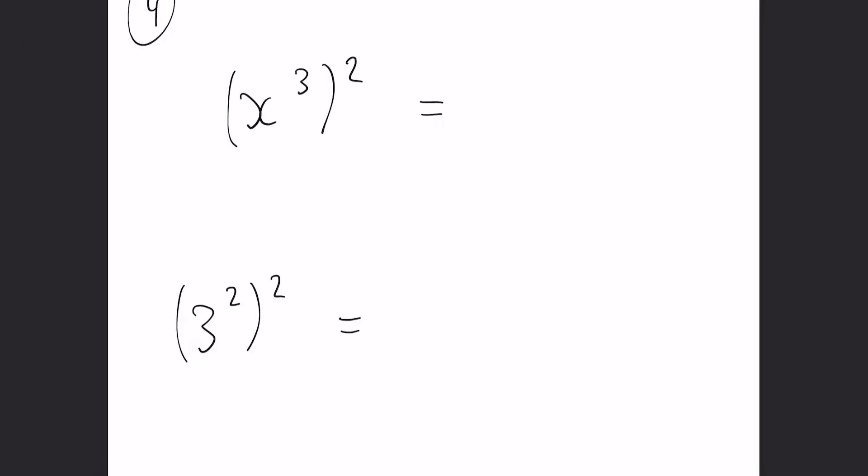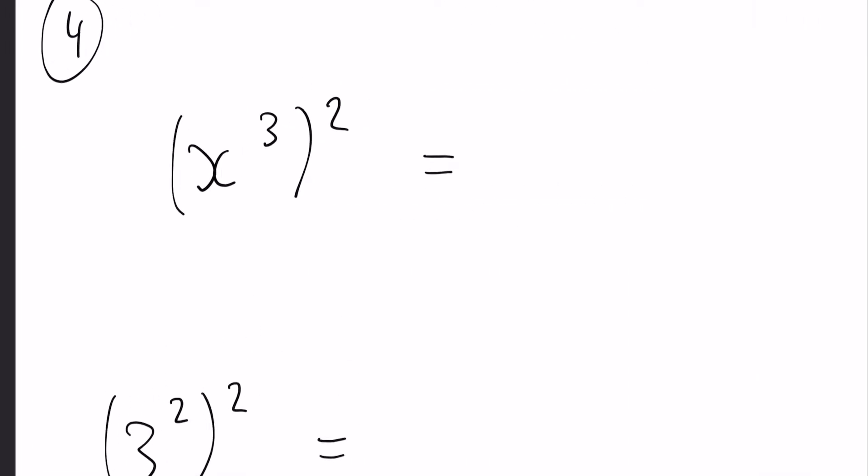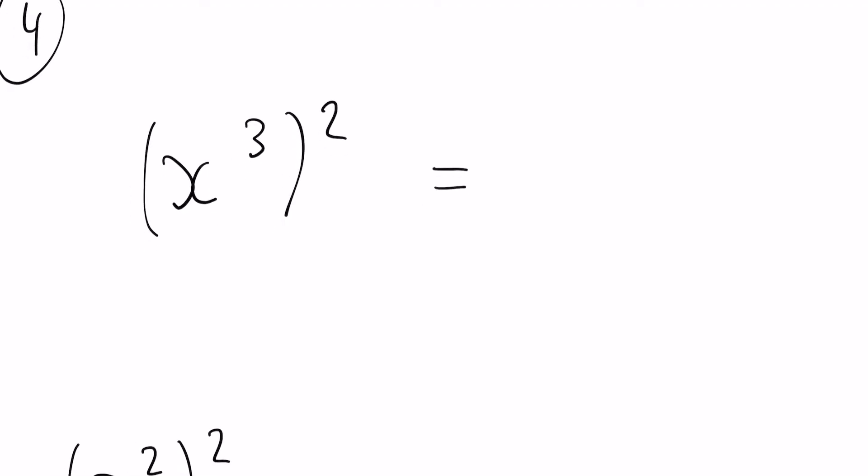Okay rule number four, x to the three brackets to the power of two, so x to the power of three squared. Now what happens here is we actually multiply those two numbers together, so simply it's just going to be x to the power of six.